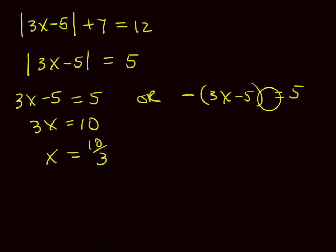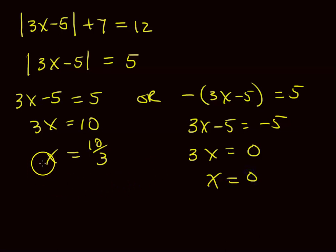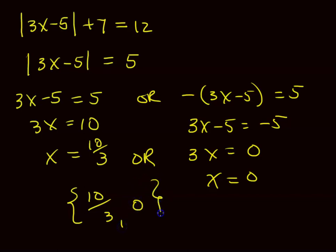For the second case, multiply both sides by negative 1 to get 3X minus 5 equals negative 5. Many people start there — it doesn't really matter. Add 5 to both sides: 3X equals 0, so X equals 0. So either X equals 10 thirds or X equals 0. The solution set in roster notation is {10/3, 0}. That's how you do an absolute value equation.